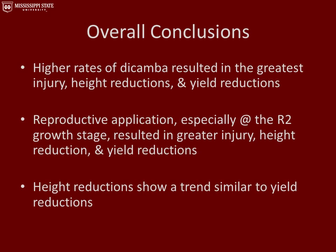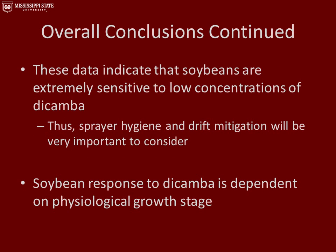Overall, with higher rates of dicamba we saw the greatest amount of injury, height reductions, and yield reductions. With the reproductive application, especially the R2 growth stage, we saw greater injury, height reduction, and yield reductions. Height reductions showed a similar trend to yield reductions throughout the experiment. These data indicate that soybeans are extremely sensitive to low concentrations of dicamba. Thus, sprayer hygiene and drift mitigation will be very important to consider, and soybean response to dicamba is dependent on the growth stage at the time of application.